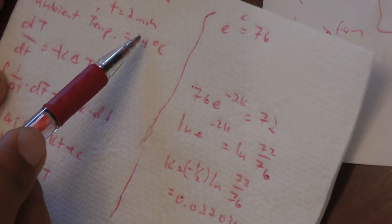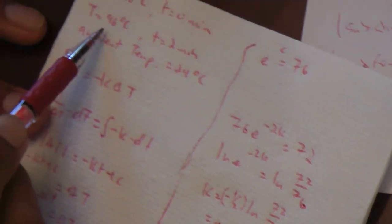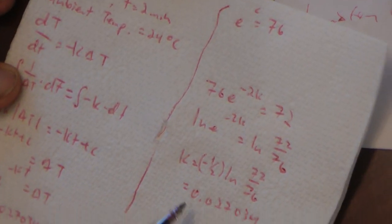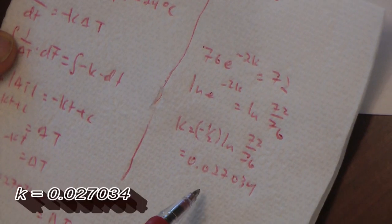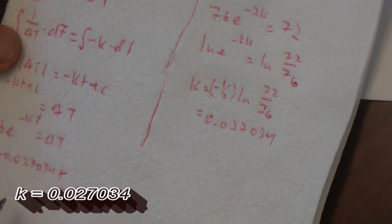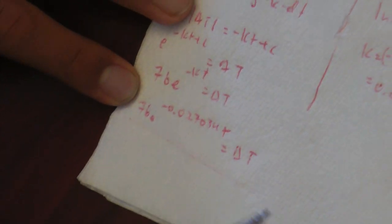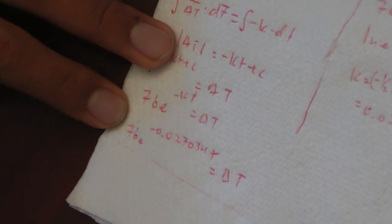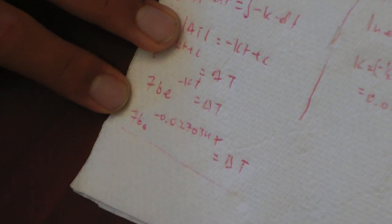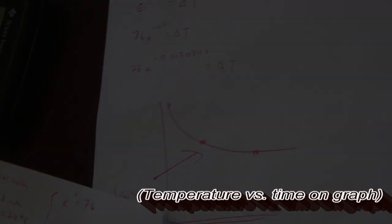We plug in the data for two minutes and 96 degrees Celsius, and we solve to get k equals 0.027034. Plug that in, and here is the equation that will show the change in temperature for this substance over time.